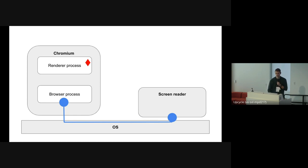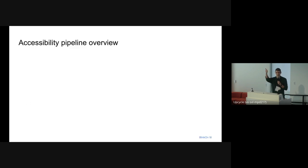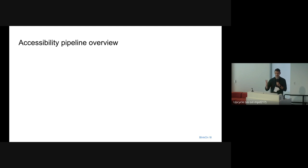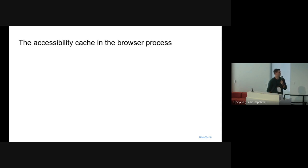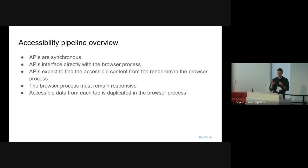So what the browser has to do is copy that content inside of the browser process, and it has to copy it before the screen reader or the assistive technology pulls that data, queries that data, or tries to control that data. So we have to always be ahead of them, and we have to do it quickly. To recap: the APIs are synchronous, they're connected to the browser process. We cannot hang the browser process — because an accessibility API can query hundreds of properties inside of one second. That leaves us no choice but to have a copy of all of the accessible data inside of the browser process.